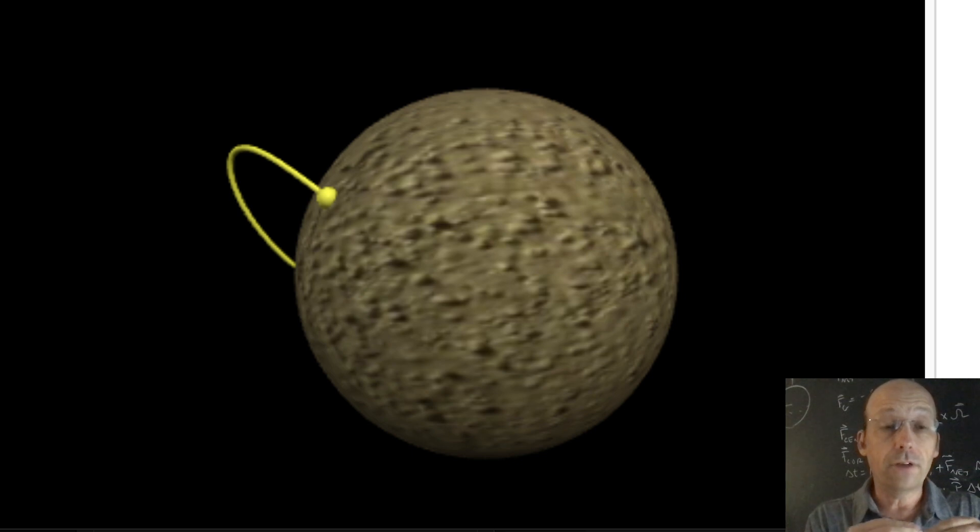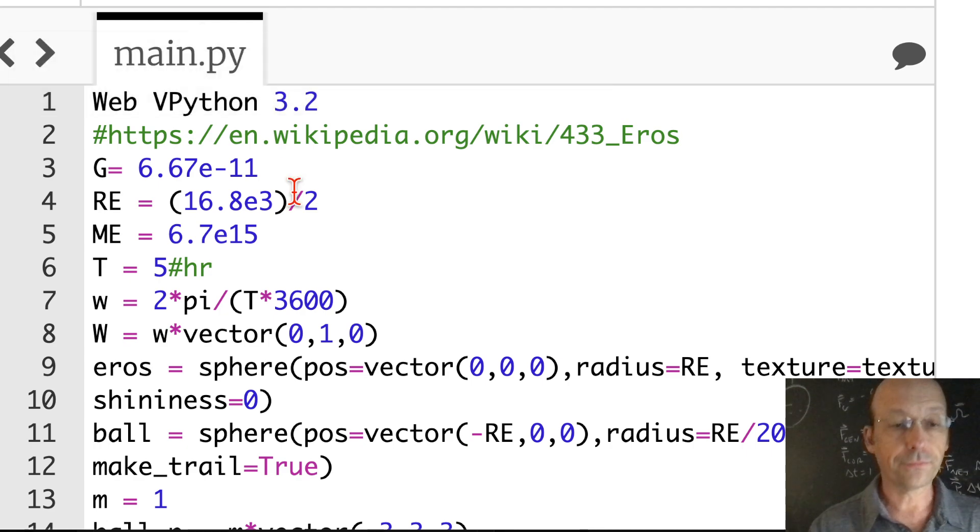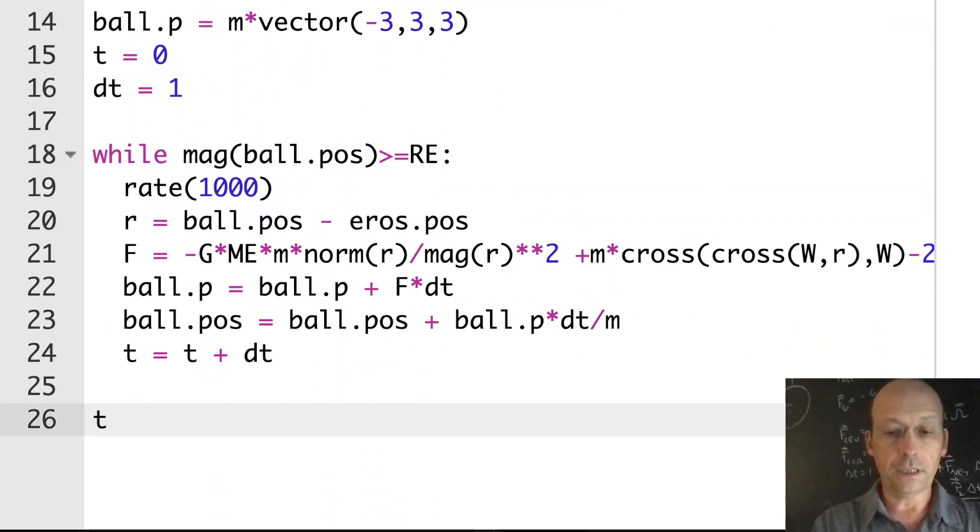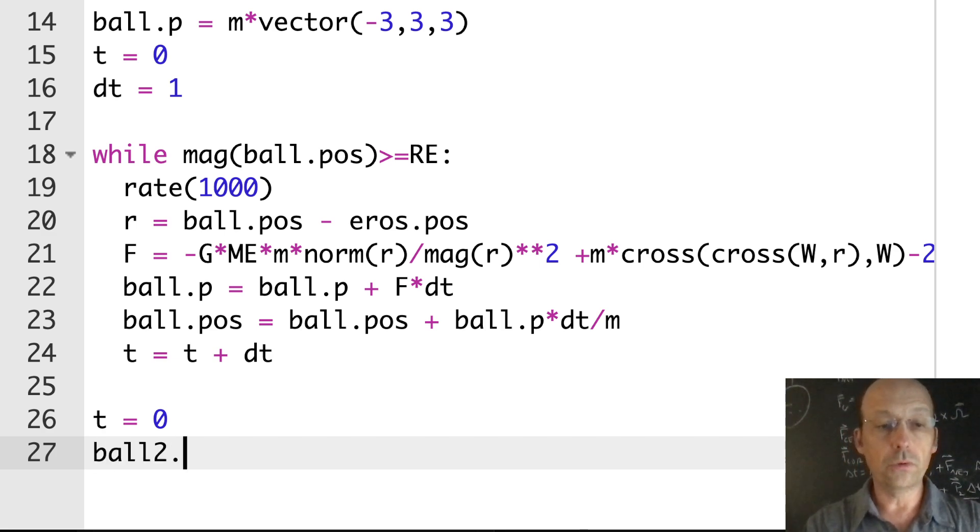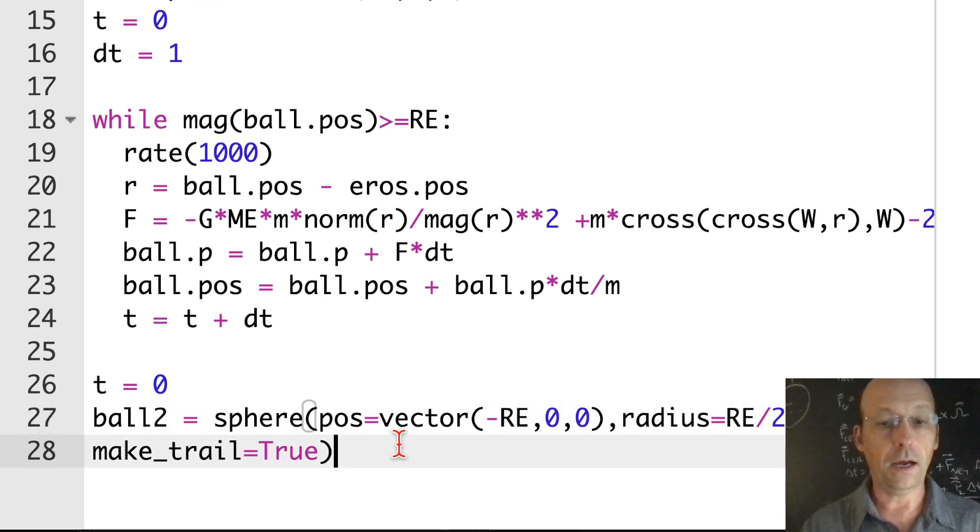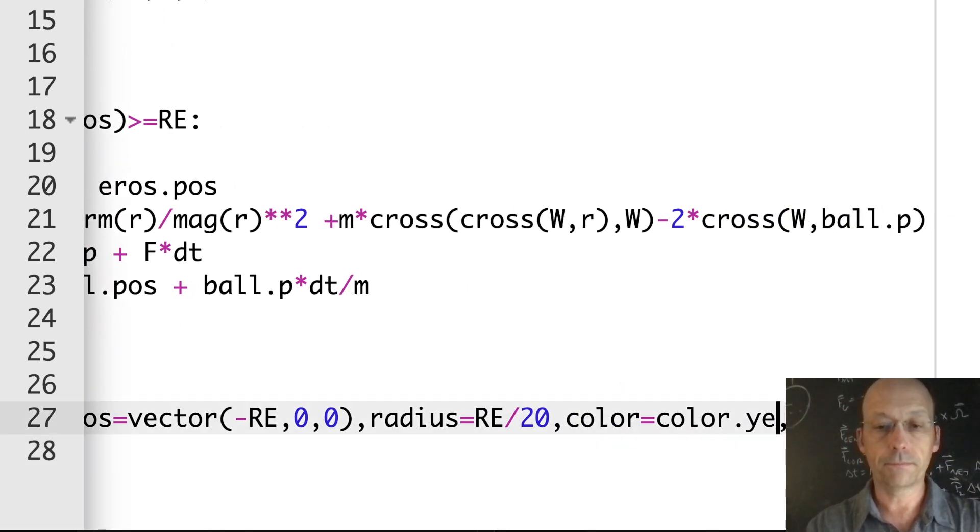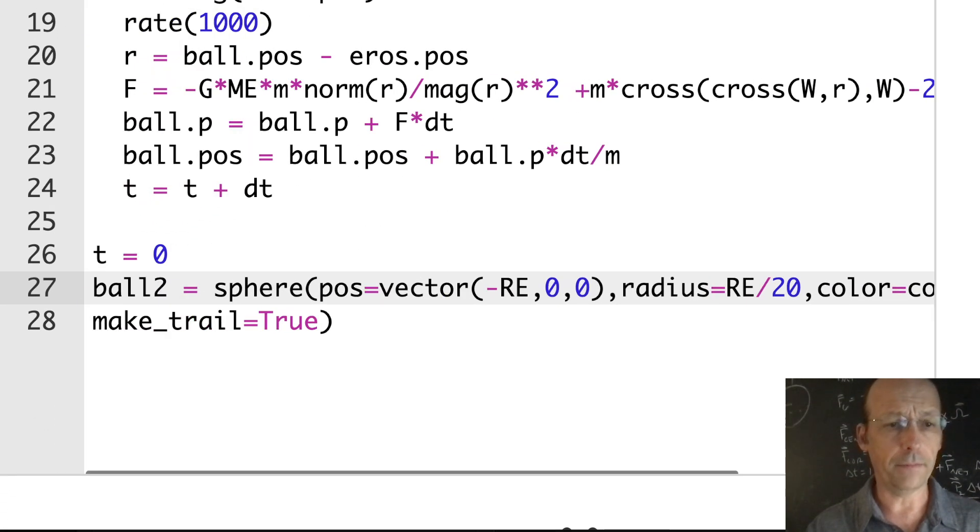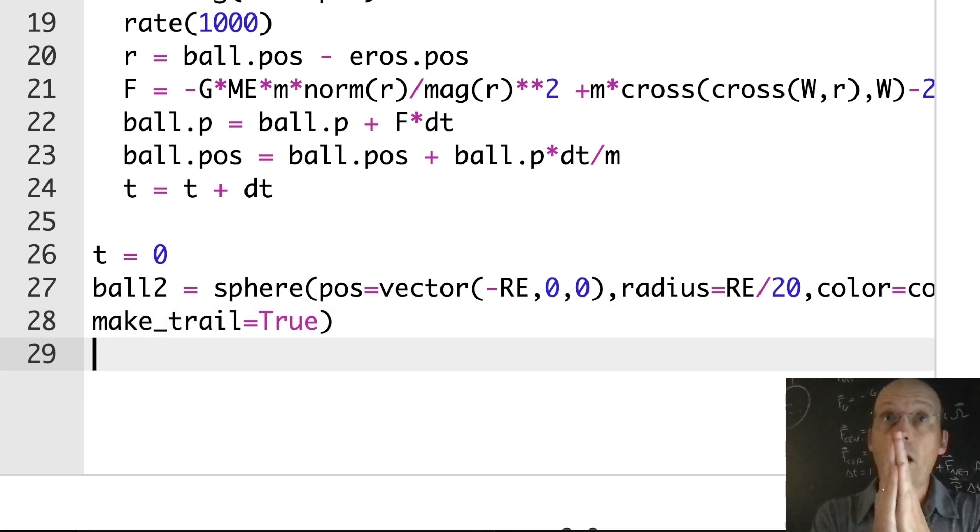Now, what I want to do is to model the same thing but with a rotating asteroid. Let's do this. Down here, I'm going to reset time. Time equals zero. I'm going to make a second ball, ball two. I'm going to put it in the same spot, and it's going to have the same mass. Everything is the same. Let's just put that there, but I'm going to call that ball two. And I'm going to make it magenta, just so we can tell it apart.